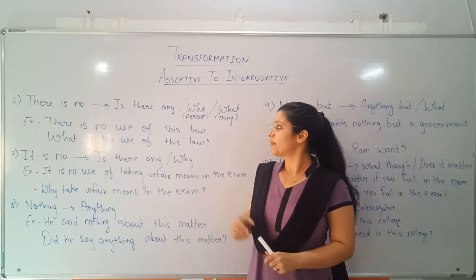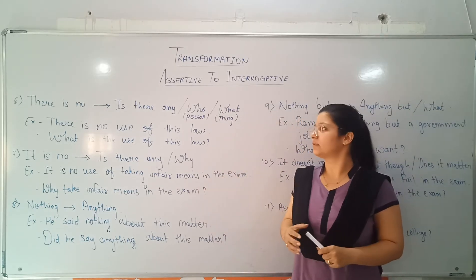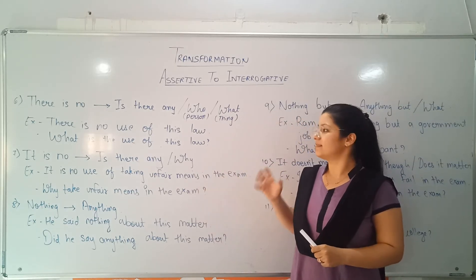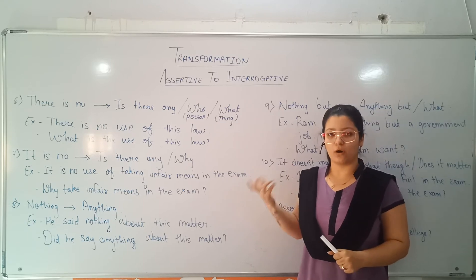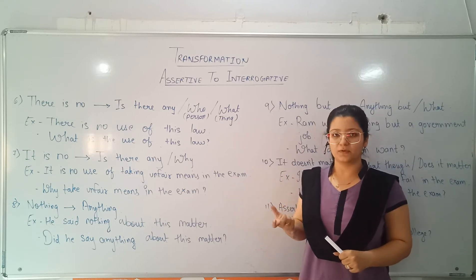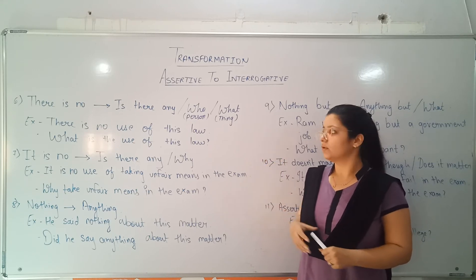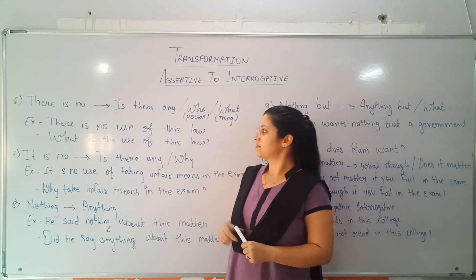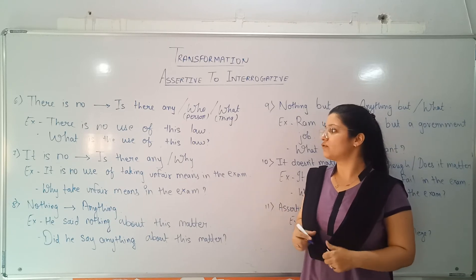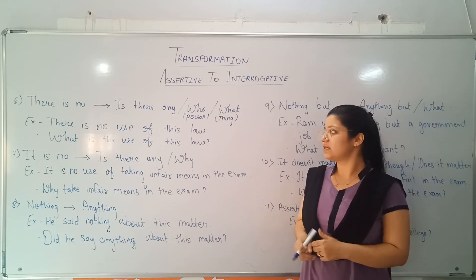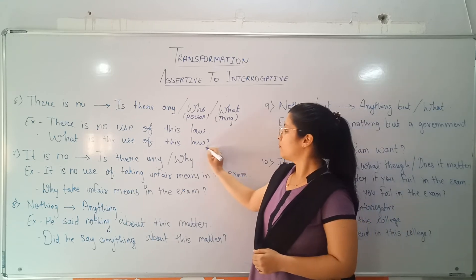Next, if there is 'no' in the sentence, we will replace it with 'is there any', or you can use 'who' or 'what' — 'who' for a person and 'what' for anything else. For example, 'There is no use of this law.' We replace 'there is no' with 'what': 'What is the use of this law?' and we end the sentence with a question mark.